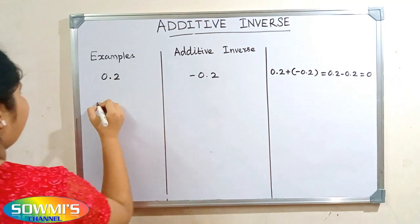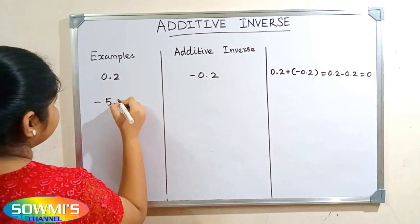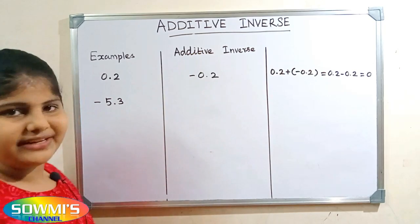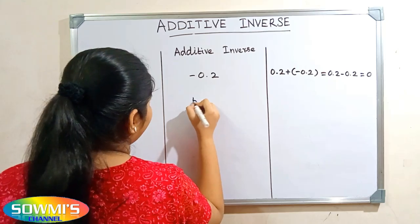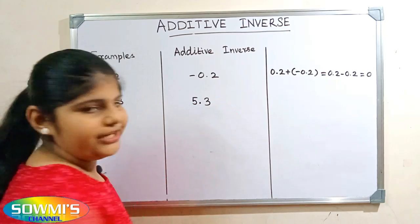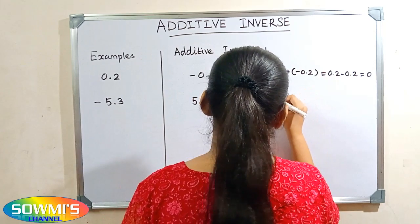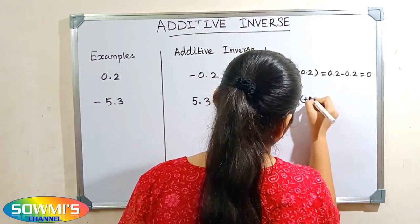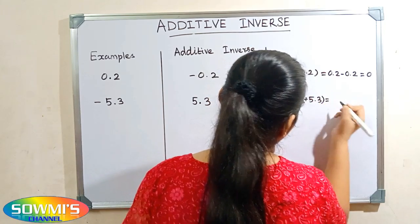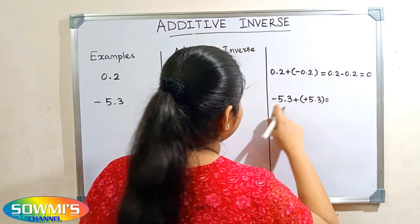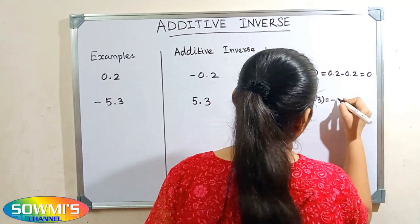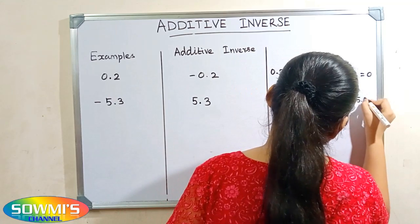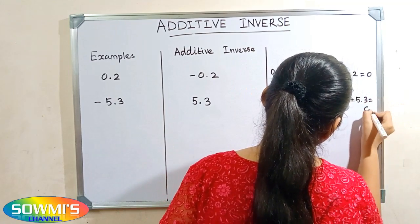Next we will take minus five point three. The additive inverse of minus five point three will be five point three. According to the property, minus five point three plus five point three — plus into plus will be plus — so minus five point three plus five point three is equal to zero.